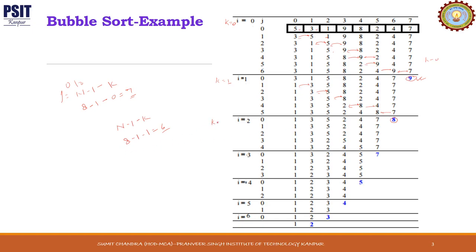Now k is equal to 2. j will run from 0 to n minus 1 minus k, that is 8 minus 1 minus 2, equal to 5 times — 0 to 4. We compare 1 and 3, no change. We compare 3 and 5, no change. We compare 5 and 2 — we have a change, so swap. Then we compare 5 and 4 — again a change, swap. Then we compare 5 and 7, no change. After execution of the third pass, the third largest element is at its proper place at the third last index.